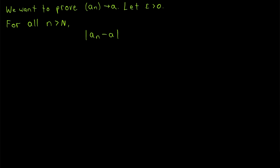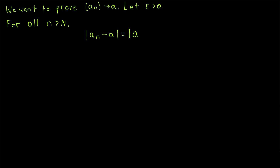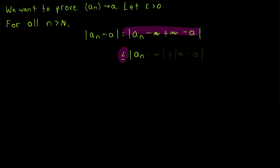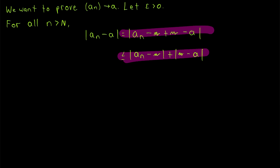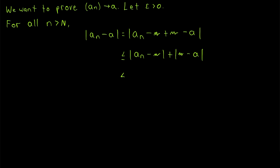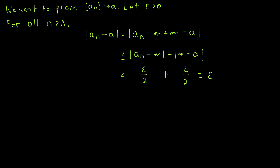A strategy we use pretty often when we have an absolute value of some subtraction is to subtract and add the same thing inside the expression. When we do that, we're able to apply the triangle inequality theorem in order to split this expression across the addition and get something that's greater than or equal to it. Optimally, we want these two things to be things that we can control, and then all we need to do is ensure that they are both less than epsilon over two, so that our desired expression is less than epsilon. The big question is: what do we subtract and add inside the absolute value expression so that we can control both parts?